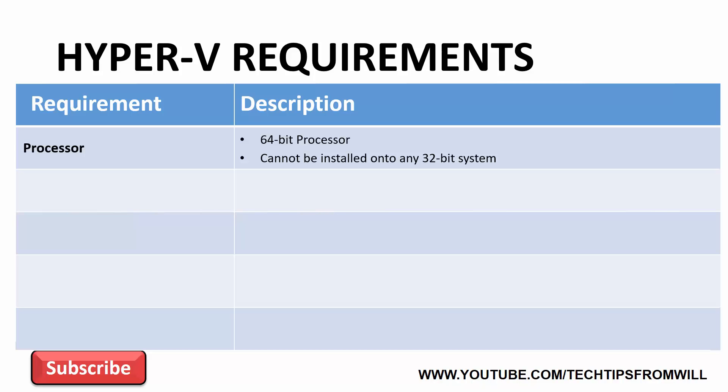Fortunately, Windows Server 2016 is only available in a 64-bit architecture. There's no 32-bit release of Windows Server 2016. Therefore, any computer running Windows Server 2016 will, by design, have a 64-bit processor.